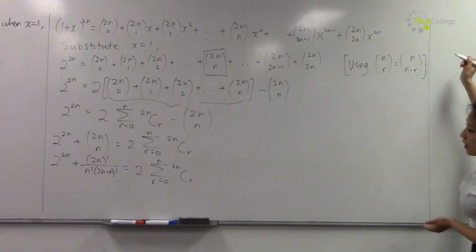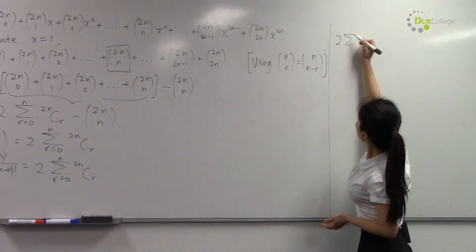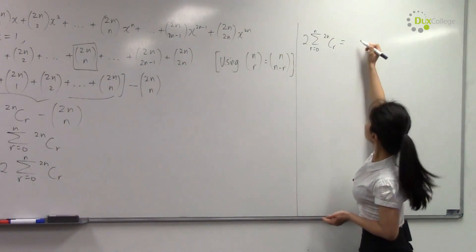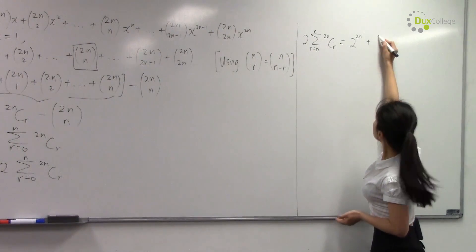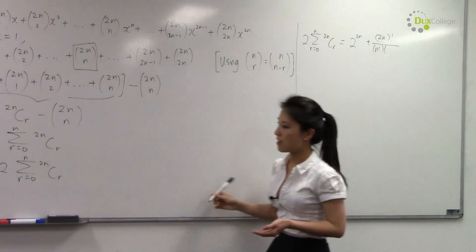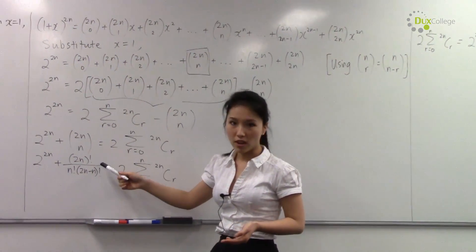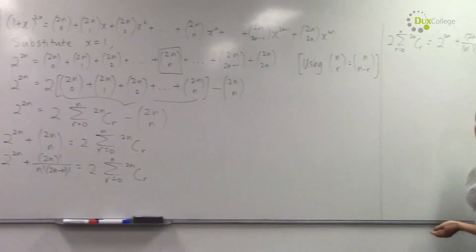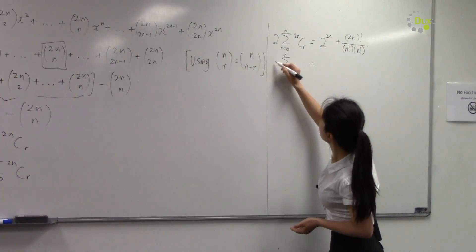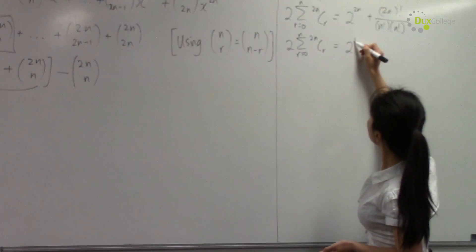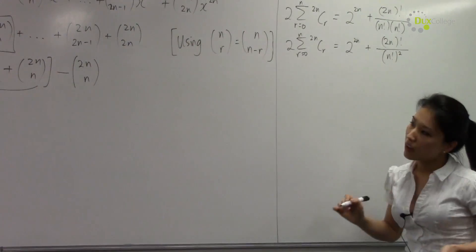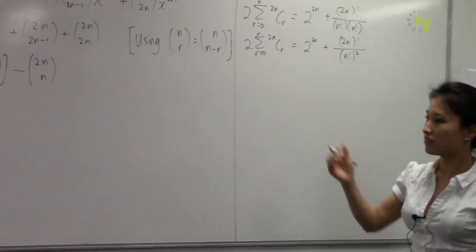Okay, let's finish off our question. So now we have here, and notice here (2n-n) factorial equals n factorial. And divide everything by 2, we have our answer.